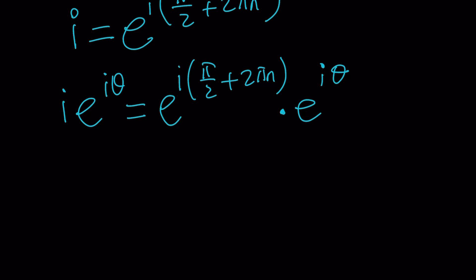That's a different story. Go ahead and add the exponents. You get e to the power i times pi over 2 plus 2 pi n plus theta. Because they both have i, I just factored it out.